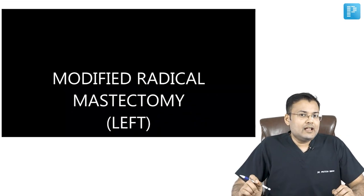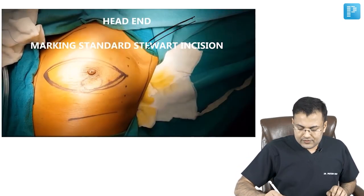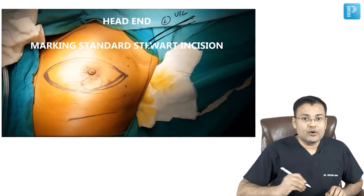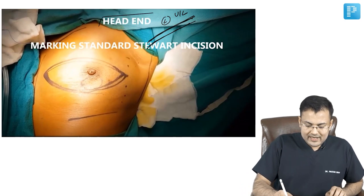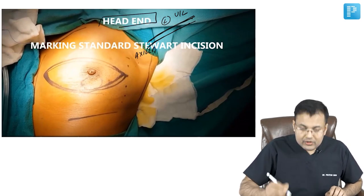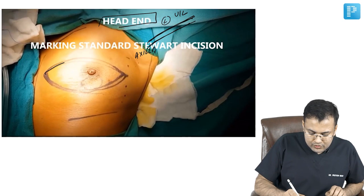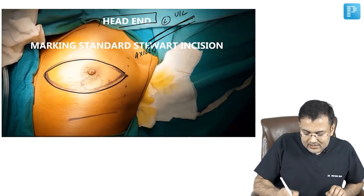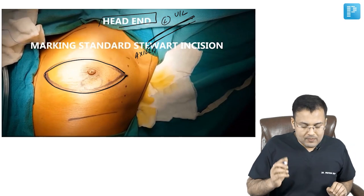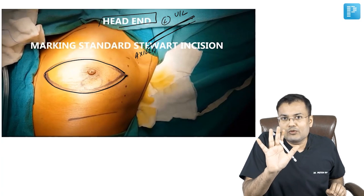See this video of left modified radical mastectomy. For your orientation, this is the left upper limb, this is the head end, and this part is the axilla. The name of incision is the Stewart incision — an elliptical incision. What we are going to include: nipple areola complex and 5 cm margin around the lump.